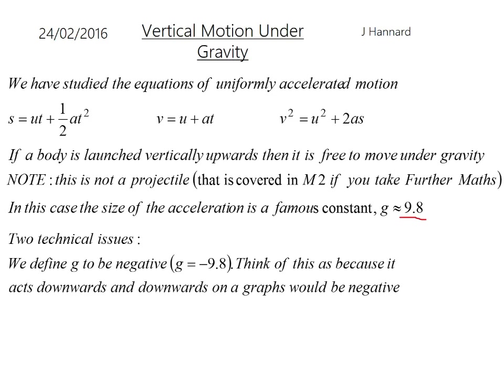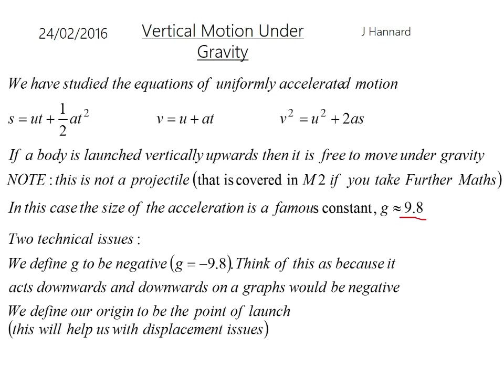Keep your displacement negative. If, for example, you're starting on a cliff 50 metres up, then displacement of the ground will be minus 50 metres, because downwards on a graph is negative. So we always define the origin to be the point of launch, and that will help us with displacement issues.